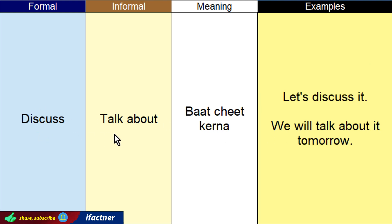Discuss aur talk about, dono ka meaning hoota hai baat cheet kerna, detail mein baat kerna. Lekin zyada word discuss ko hum formal environment mein use kertay hain, aur talk about ko informal environment mein use kertay hain. Jaisay class mein teacher kehegi 'Let's discuss this topic' ya 'Let's discuss it.' Lekin dost ko meinne kehna hai toh kahoon ga 'Let's talk about it' ya phir 'We will talk about it tomorrow' — hum isay kal iske baare mein baat karenge.